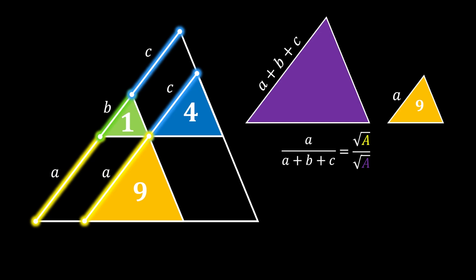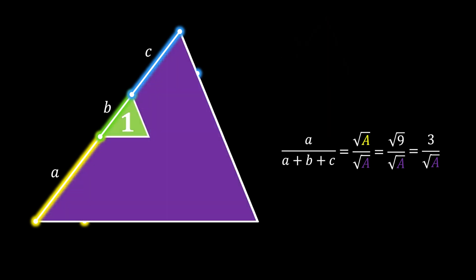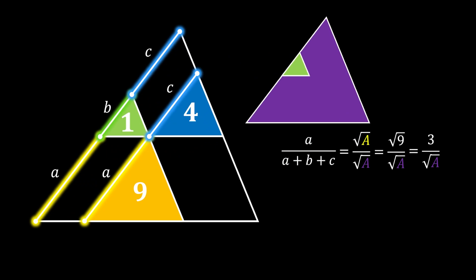Since we know that the area of the yellow triangle is equal to 9, we can substitute this value and get that this relation is equal to 3 over the square root of the area of the big triangle. Now let's do the same for our big triangle and our left inscribed triangle.